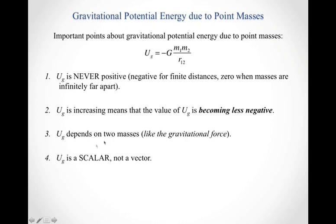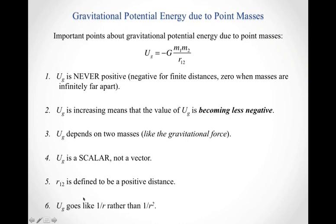The gravitational potential energy is a scalar, not a vector, and R_12 is defined to be a positive distance. Notice that the gravitational potential energy goes like 1 over R rather than 1 over R squared. This equation looks very similar to the gravitational force magnitude, but with two important differences: there's a minus sign, and the distance is not squared as it was in the force equation.